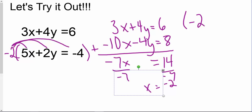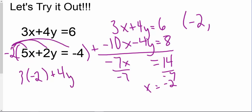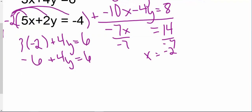So I have negative 2 comma some other y value. From here, I'm going to plug that value for x into one of my equations. I'm going to use the top one, which gives me 3 times negative 2 plus 4y equals 6. So that gives me negative 6 plus 4y equals positive 6. Adding 6 to both sides gives me 4y equals 12.